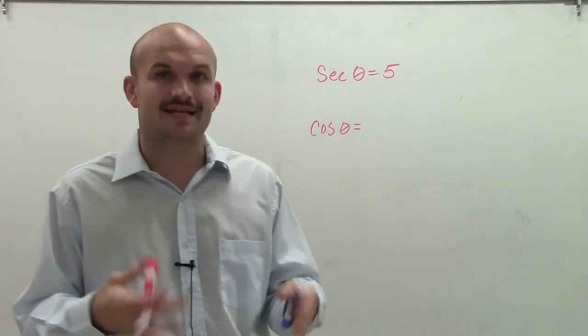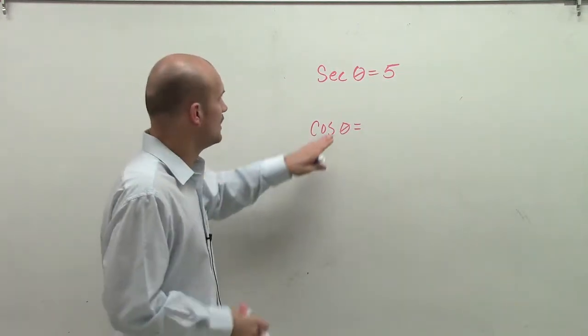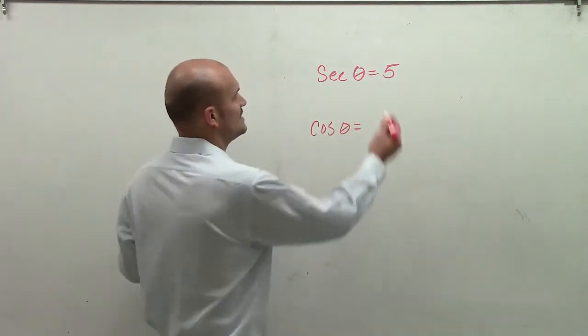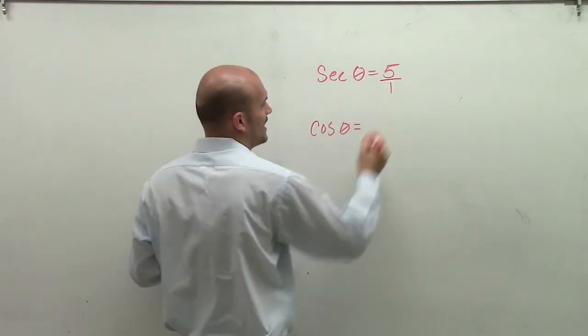So remember, secant is the reciprocal of cosine. And that means with reciprocal functions, if we can write - if I say secant is 5, we can rewrite that as a fraction.